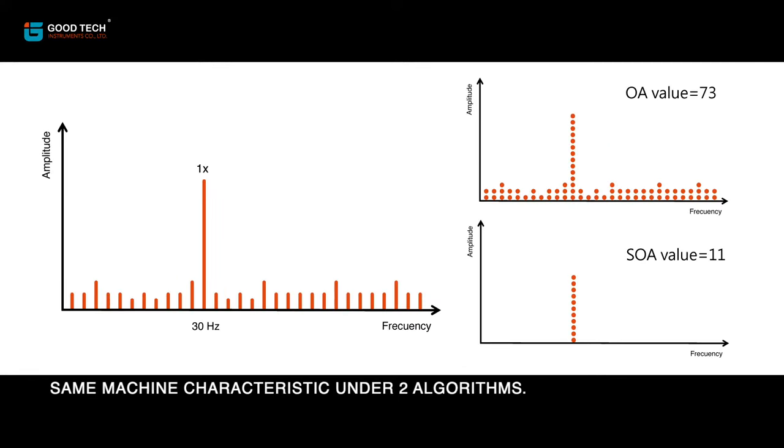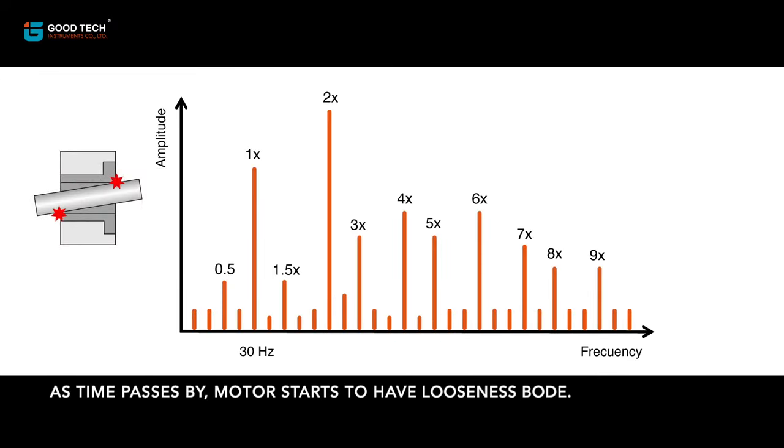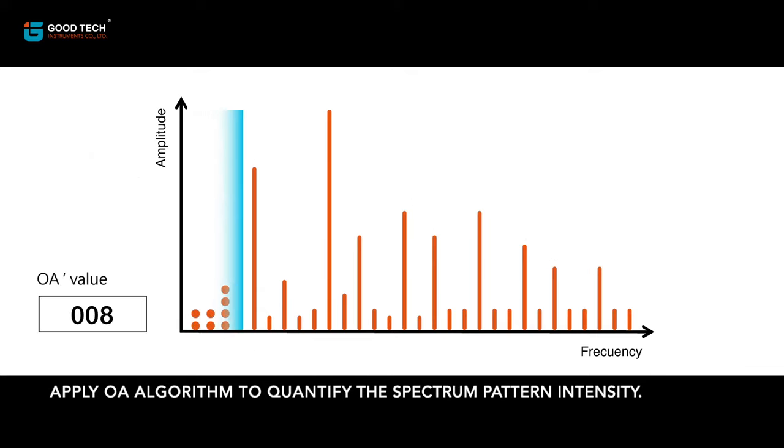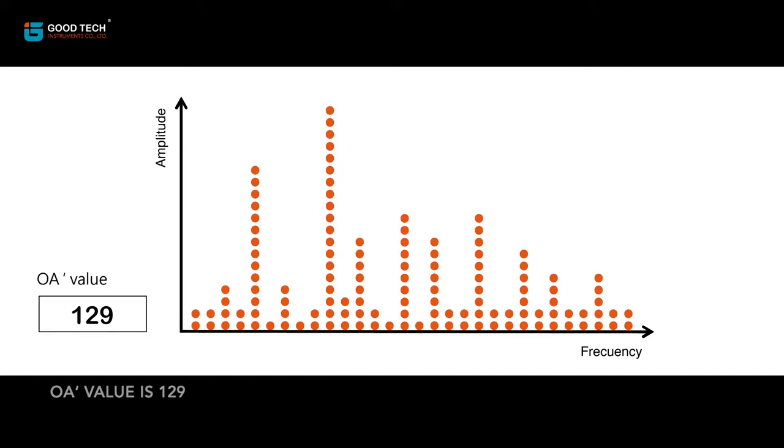Same machine characteristic under two algorithms. As time passes by, motor starts to have looseness. Apply OA algorithm to quantify the spectrum pattern intensity. OA value is 129.